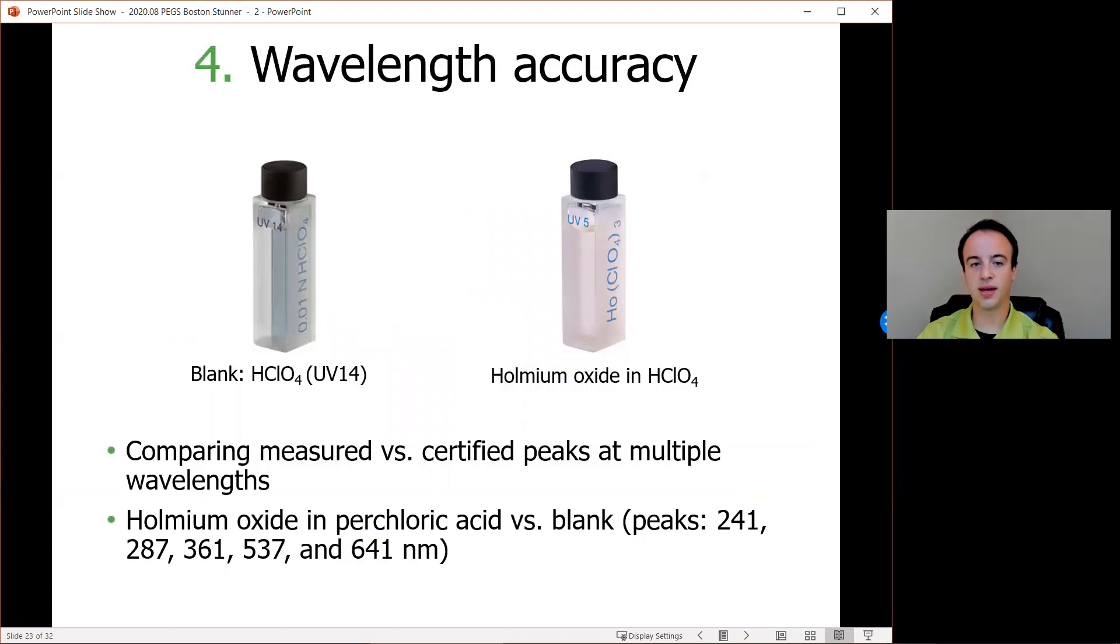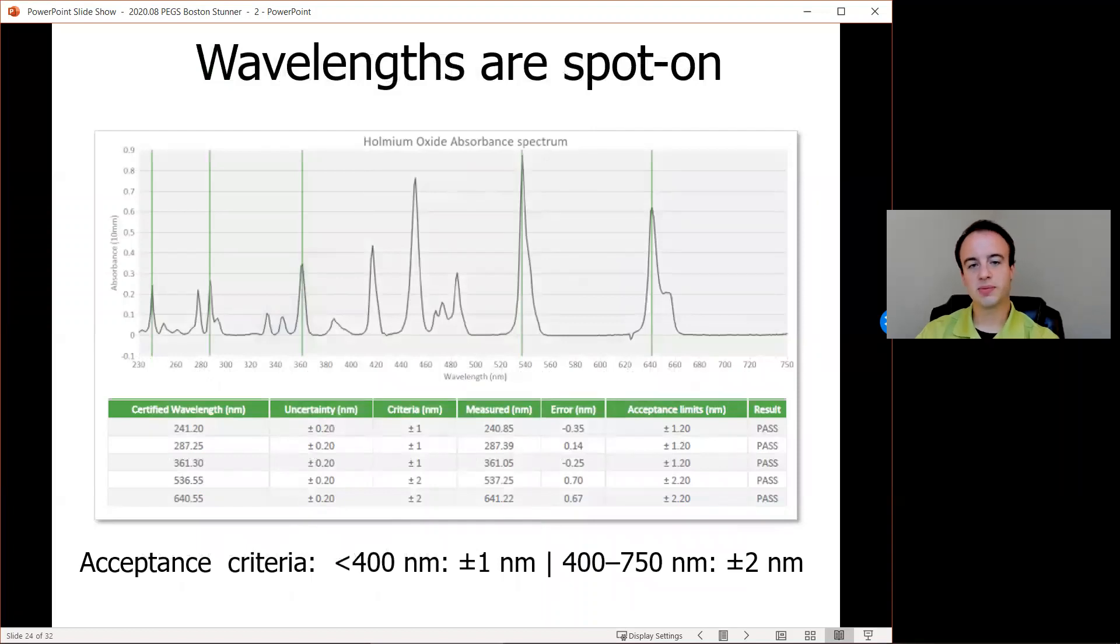So next, to look at wavelength accuracy, we're going to be measuring the absorbance spectrum of a traceable reference material with well-defined peaks at multiple wavelengths and comparing the measured wavelengths to the known peak maxima. The peak maxima for holmium oxide in perchloric acid are shown at the bottom of the slide. The acceptance limits of the measured peak maxima are calculated by adding the manufacturer's uncertainty to the acceptance criteria, and they depend a little bit on the wavelength where the measurement is being measured. But it's easy to see that all measurements are well within the criteria, with even the largest error between expected and measured values only being 0.7 nanometers, which is well within the most stringent requirement of this test.